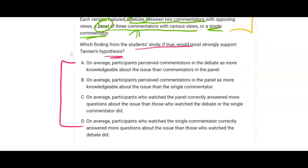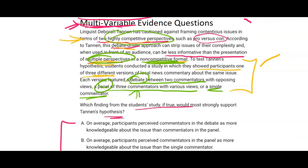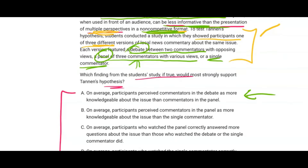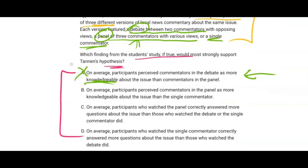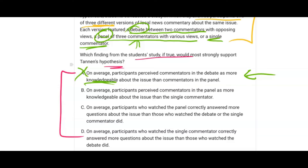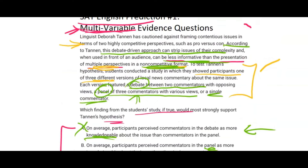Answer A says on average, participants perceived the commentators in the debate as more knowledgeable than commentators in the panel. That doesn't speak to the actual argument because it's just saying the audience perceives the debate people as more knowledgeable — that doesn't mean they gained any new information, so it can't be A. Answer B is weird because you're comparing the panel to the single commentator, but the original claim was against the debate-driven approach, not the single commentator. So it cannot be B.